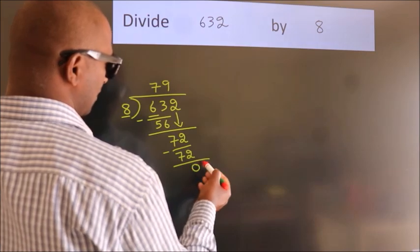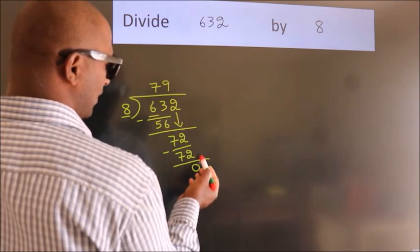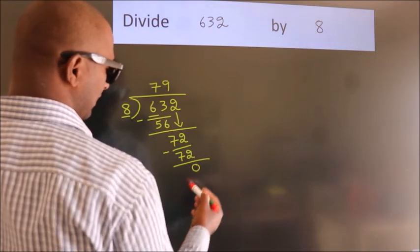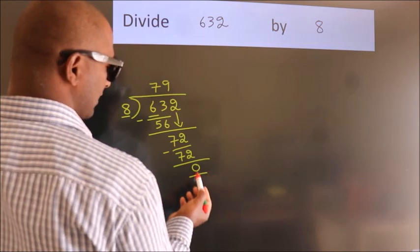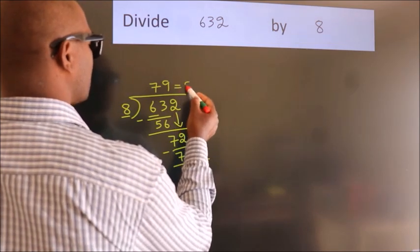After this, no more numbers to bring down. And we got remainder 0. So this is our quotient.